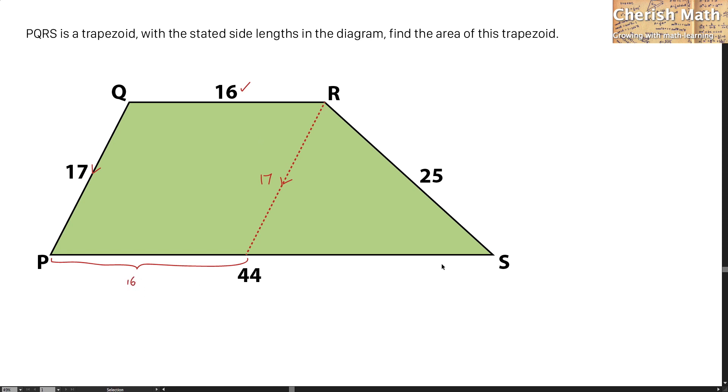And now I'm going to make a second line. And this line that I have just made is perpendicular with this base PS. I'm going to label it as 90 degrees. And this is known as the height of this trapezoid that I label with h.